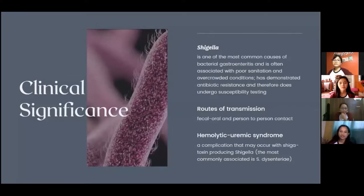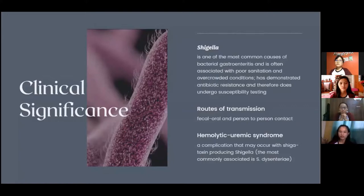For clinical significance, Shigella is one of the most common causes of bacterial gastroenteritis and is often associated with poor sanitation and overcrowded conditions. Shigellosis can affect children, travelers due to poor sanitation, gay and bisexual men, and immunocompromised patients such as those infected with HIV. Shigella can cause disease with as few as 10 organisms and has demonstrated antibiotic resistance, requiring susceptibility testing. It is resistant to ampicillin and trimethoprim, and is increasingly resistant to ciprofloxacin, which is globally prescribed for travelers' diarrhea.